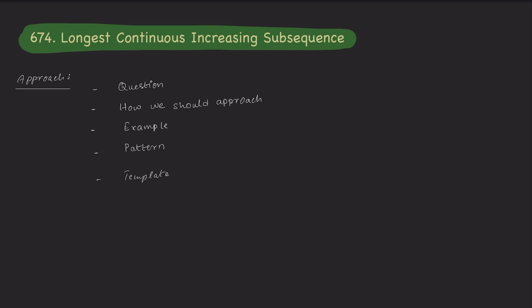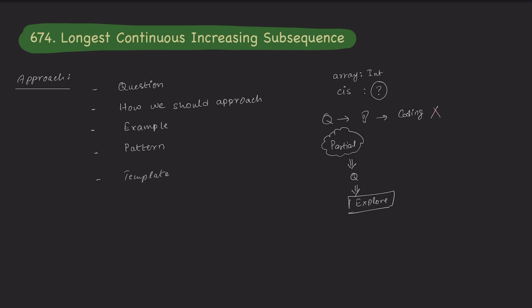This question can be asked in a way like: you have an array of integers and you have to return the longest continuously increasing subsequence. Now when you hear the question, you should not start coding immediately — that is not what is expected. Most of the time, the person asking the question is providing partial information and expecting you to ask clarifying questions so they can explain clearly. They are looking for your skill set: do you start coding immediately, or do you explore and clear your doubts first?